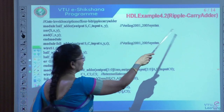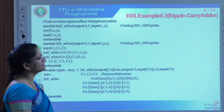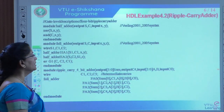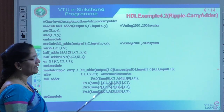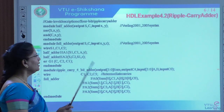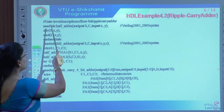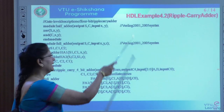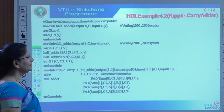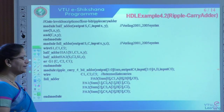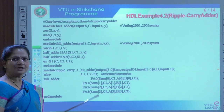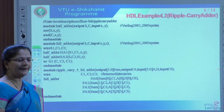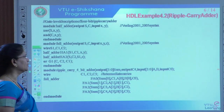Now we will see how to implement this in our programming. Here I have taken one example — it is a ripple carry adder — using gate level modeling. Gate level description for the 4-bit binary ripple carry adder. Gate level includes predefined primitives as well as user-defined primitives.